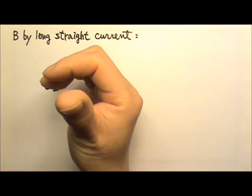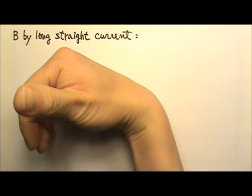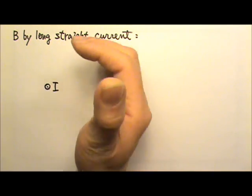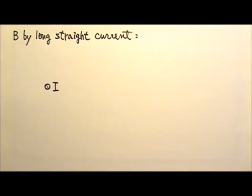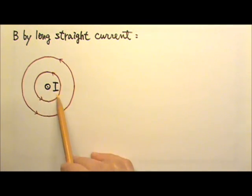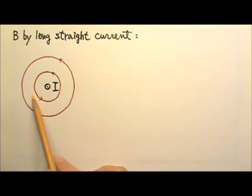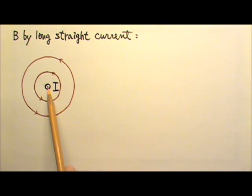If I use my thumb to follow the current, the curved four fingers tell me that the magnetic field lines will go counterclockwise. If I draw the magnetic field lines, I would get circles. They are exactly circles because of the cylindrical symmetry for the long straight current.